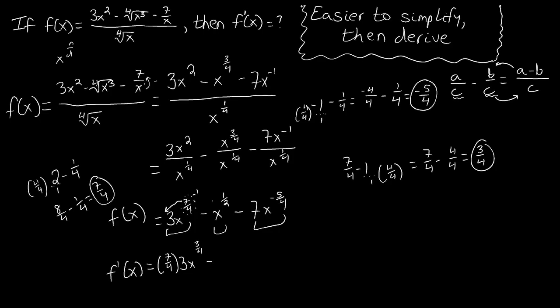In this case, we bring down the power, so we have one-half x, and then one-half minus one is simply negative a half, right? Because we subtracted one from one-half, and we get negative a half.